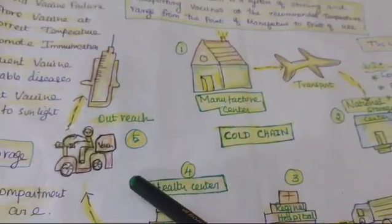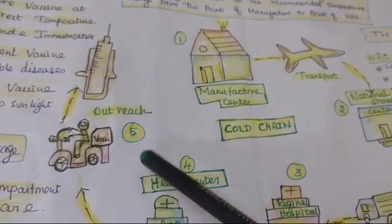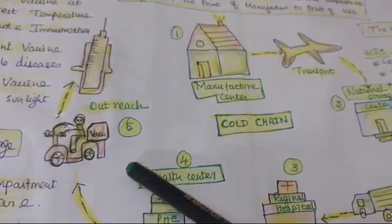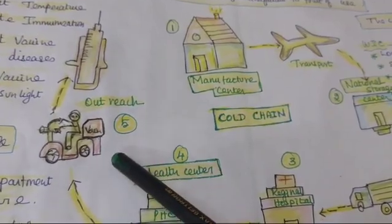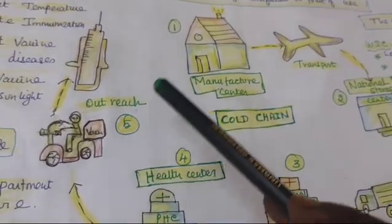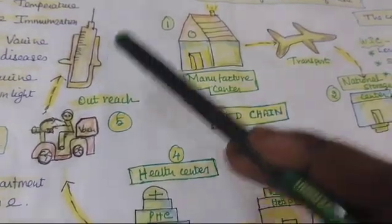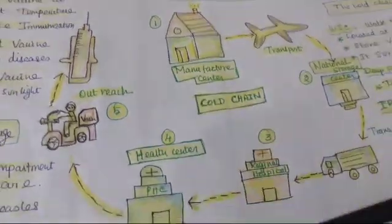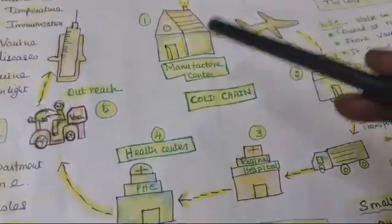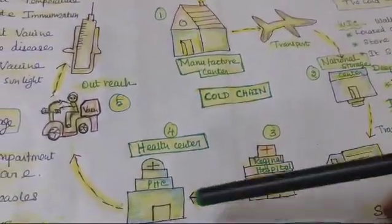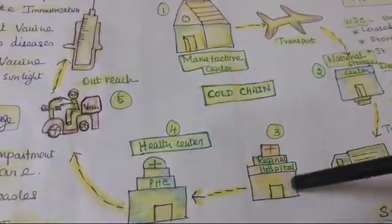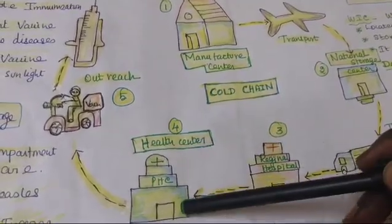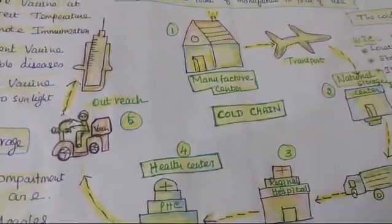The outreach area is where vaccination takes place, such as on Wednesdays. All the people involved will be taking the vaccine from the vaccine carrier to the people — even to their doorsteps. Whatever the case, whether the person is taking the vaccine from the hospital or the primary health care center, the heat potency has to be maintained.